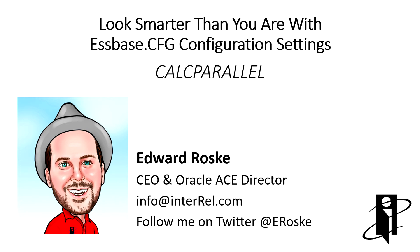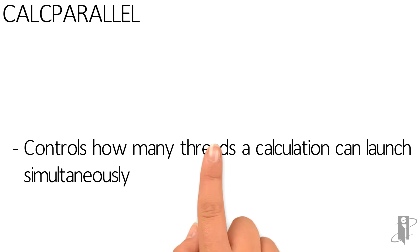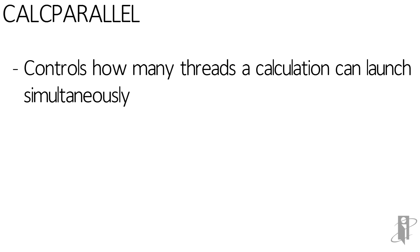If you want to turn on parallel calculation at the server level, you're going to need to use the S-Space CFG setting Calc Parallel. Calc Parallel controls just how many threads a calculation can launch simultaneously, or theoretically the maximum number of threads it can launch.